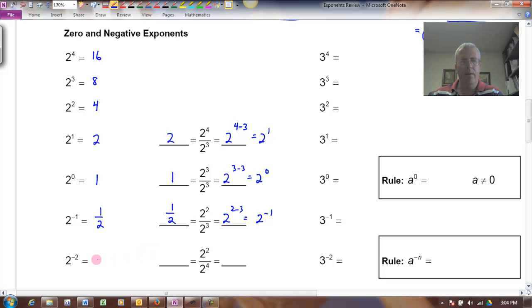And if I had 2 squared over 2 to the fourth, that would be 2 to the 2 minus 4. That's 2 to the negative 2. And that's the same thing, canceling the 2 twos on the top here with 2 of the 4 twos on the bottom. That would leave me 2 squared in the denominator. And notice that's the same thing as if I were to just divide this by 2 again. That would give me 1 fourth, which is 1 over 2 squared.